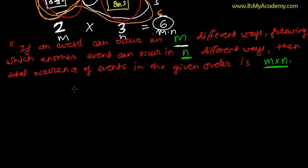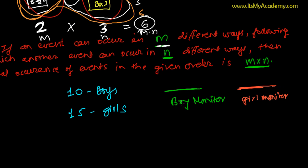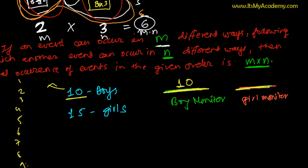Let me give you one more quick example. In a school class, let's say there are 10 boys and 15 girls. The principal wants to select one boy monitor and one girl monitor for handling those naughty boys and girls. So there are two monitors to select: one must be a boy and one must be a girl. For the boy monitor, there are 10 boys — the names are 1, 2, 3, 4, 5, 6, 7, 8, 9, and 10 — and any one of them can be the monitor.